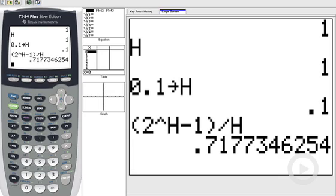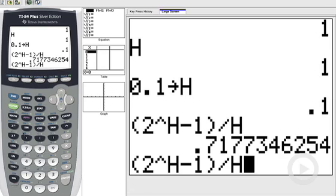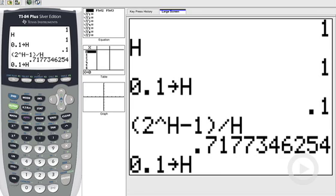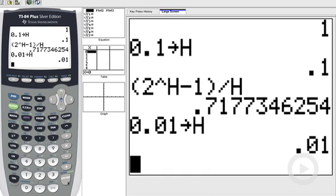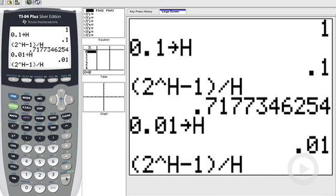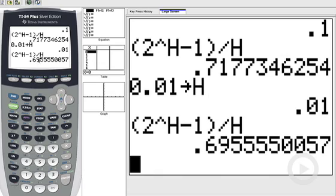Let's do that again. Let's make a smaller value of h. So I have to hit second entry twice to get back to that command. So let me go back. And then I'm going to insert, second, insert, throw in a zero. So now it's 0.01 that's being stored as h. Hit enter. And then hit second entry, second entry. Now let's execute this difference quotient again, 0.69555.